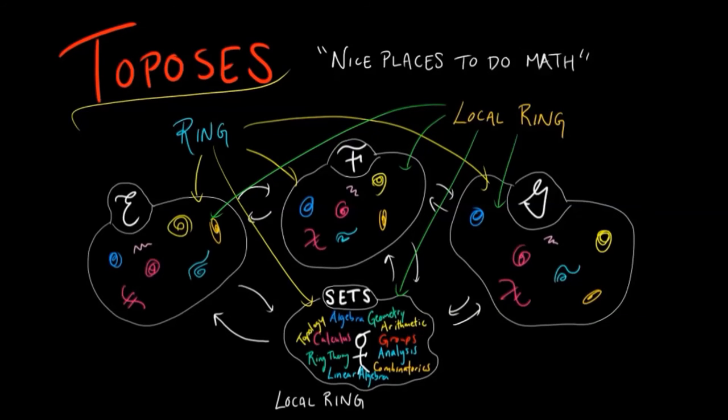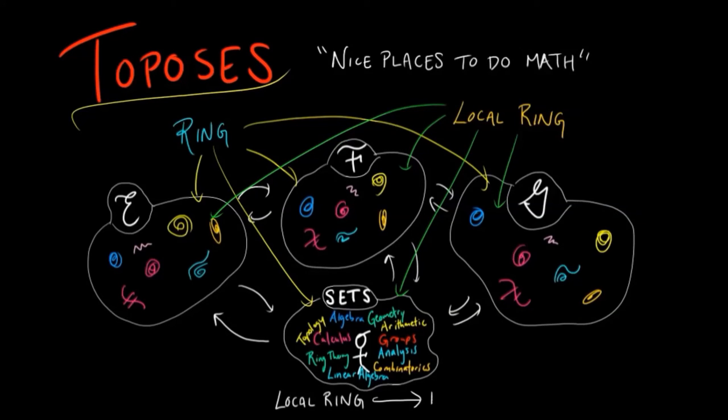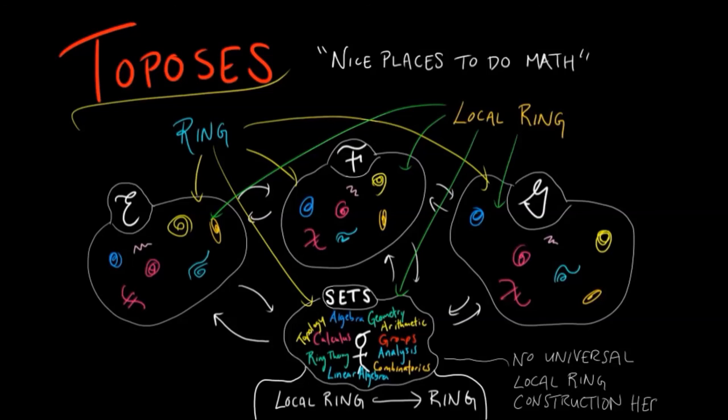In each topos, a local ring is a commutative ring, indicated by the inclusion arrow. If we restrict ourselves to sets, then a universal local ring construction from rings is an impossibility. In other words, there are often many ways a ring can be made local, with sometimes no canonical choice.